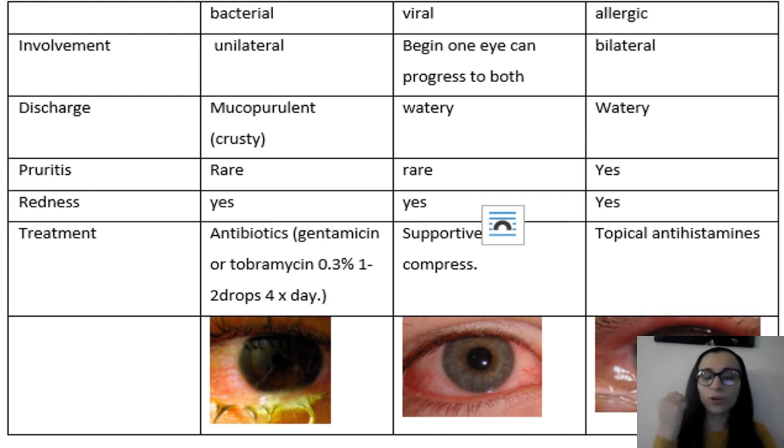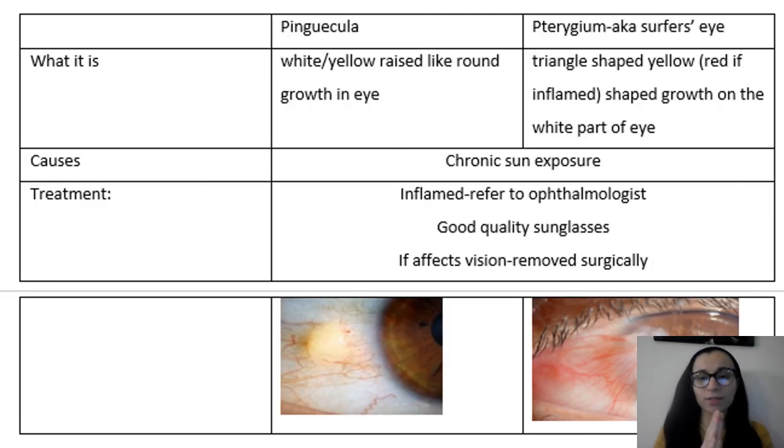With bacterial, you're going to see mucopurulent crusty. As you look in the picture, it's like yellow mucus drainage. Viral is going to be watery and allergic watery. So again, if you have that drainage, automatically think bacterial. Itchiness is very common with allergic. So if someone has itchiness, you want to think of allergic conjunctivitis. Redness is going to be with all of them, like we see in the picture. The treatments are going to be a little different. With bacterial, obviously antibiotics like gentamicin, tobramycin, the drops. Viral is going to be supportive, warm compress. Allergic could be topical antihistamines.